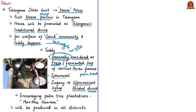The government is also encouraging palm tree plantations to revive the livelihood of toddy tappers. This is part of 'Haritaharam' (Telangana ku Haritakaram), a flagship program of the Telangana state government aiming to increase tree cover from 24% to 33% of the state's total geographical area. Under the Neera policy, Neera would be produced in all districts of the state in phases.